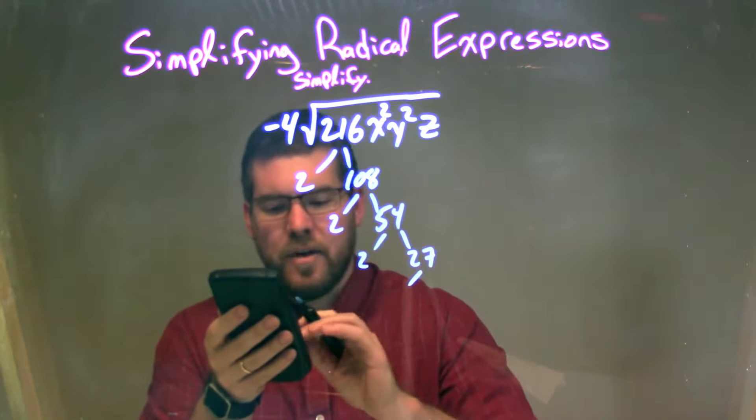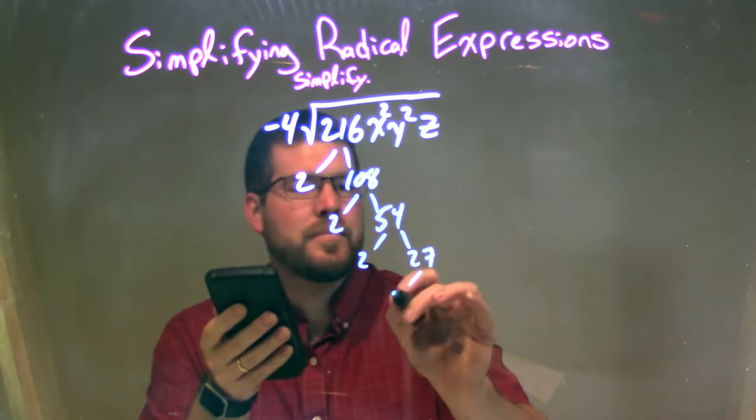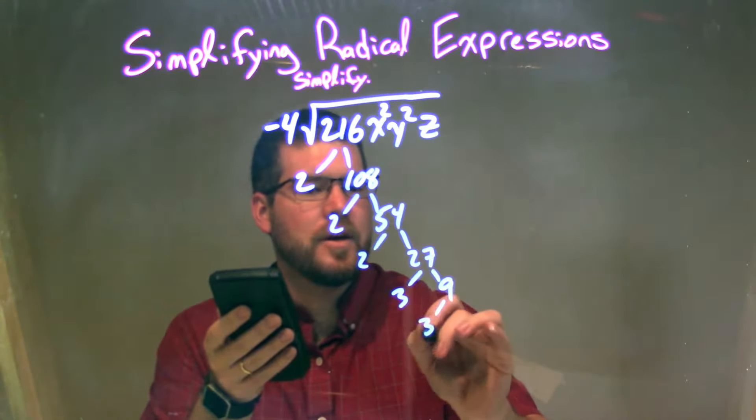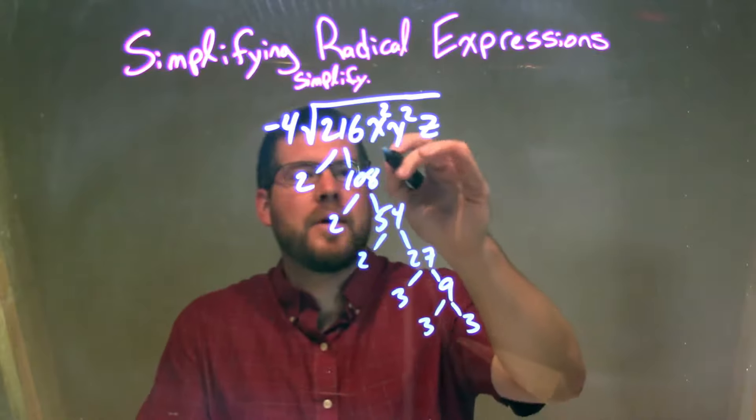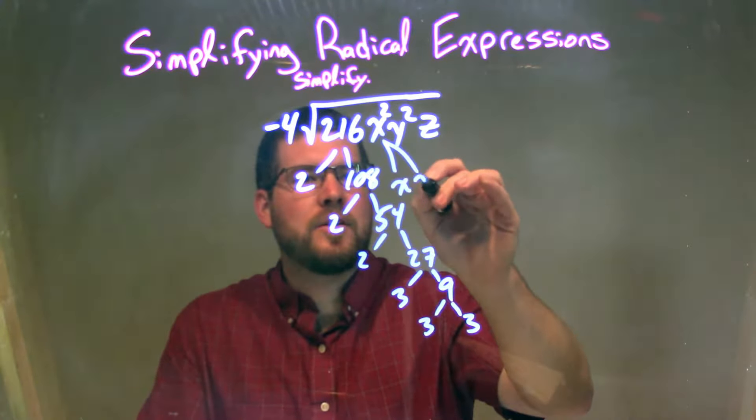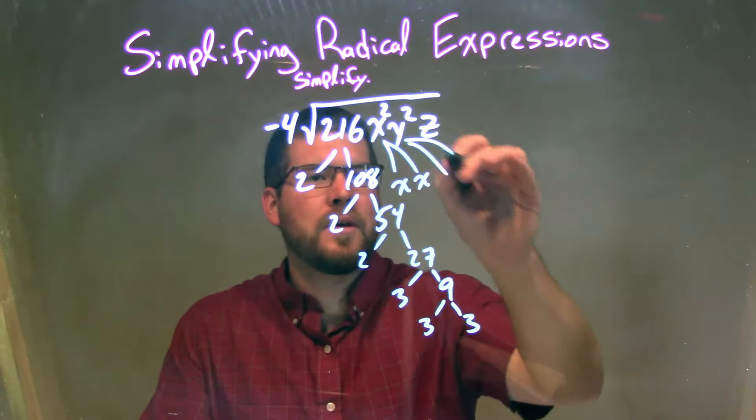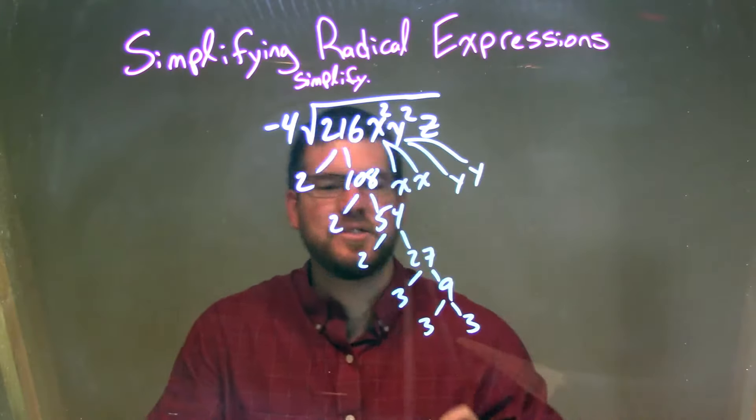And 27 divided by 3 is just 9. So 3 and 9, and 9 is 3 and 3. From there, I'm going to break down my x's to be x squared to be x times x, y to be y times y, and z is just by itself.